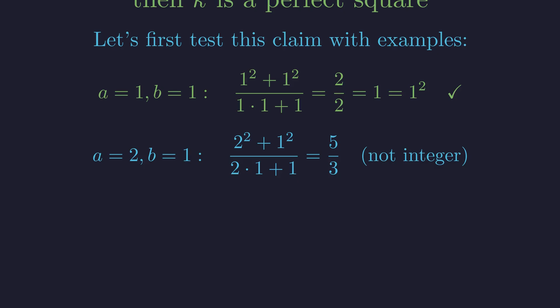For a equals 2, b equals 1, we get 5 thirds, which isn't even an integer.